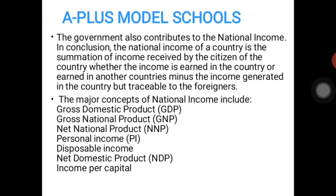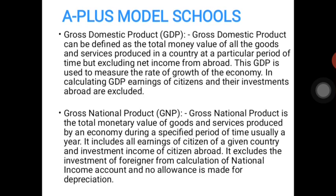Now let's see the major concepts of national income. When dealing with national income you must talk about the GDP — Gross Domestic Product — and the Gross National Product, Net National Product, Personal Income, Disposable Income, Net Domestic Product, and Income Per Capita. These are the seven major concepts, so let's consider them one after the other.